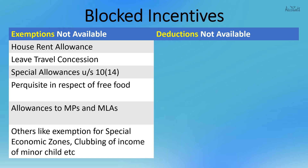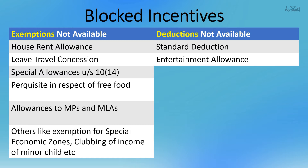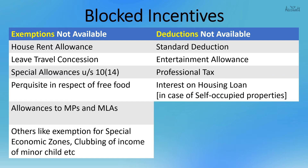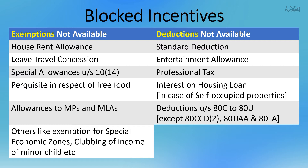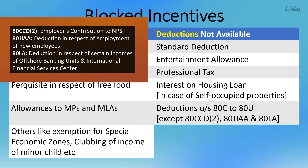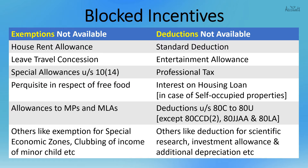Deductions blocked under the new regime include: the standard deduction of 50,000 rupees, entertainment allowance deduction for central and state government employees, professional tax deduction, and deduction of interest on housing loan for self-occupied properties — though interest on housing loan for let-out properties would continue. Deductions under Section 80C to 80U are also blocked, except 80JJAA and 80LA, plus deductions for scientific research, investment allowance, and additional depreciation claimed by businesses.